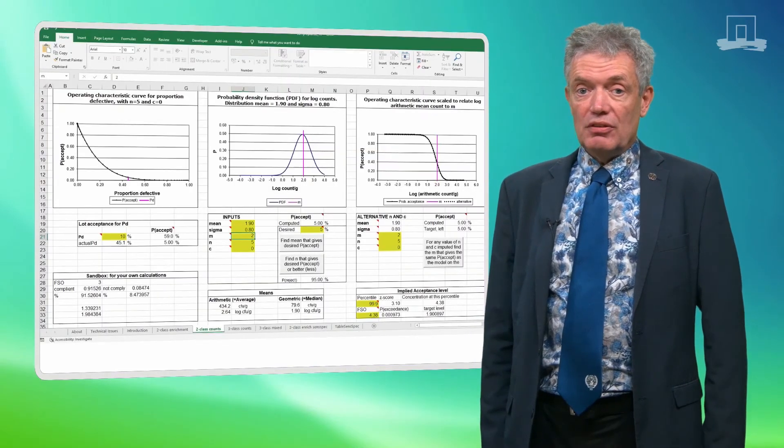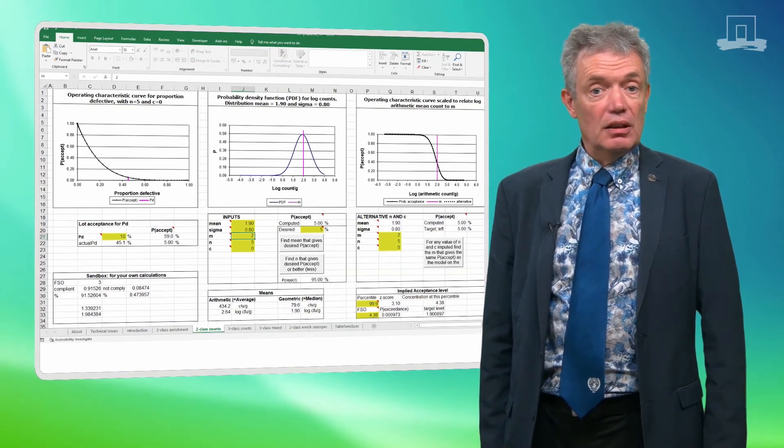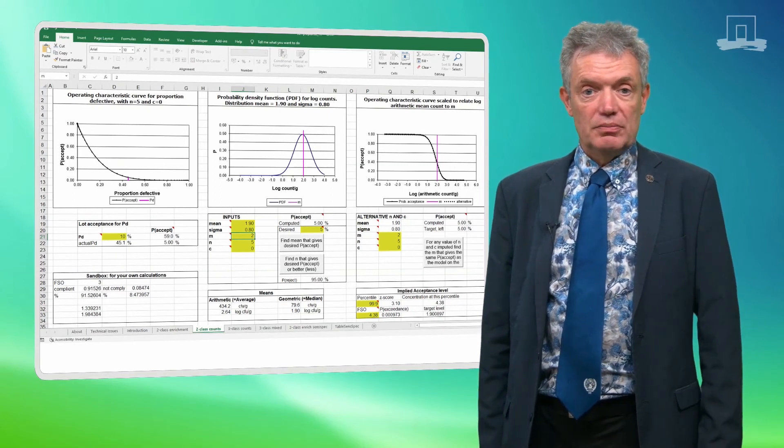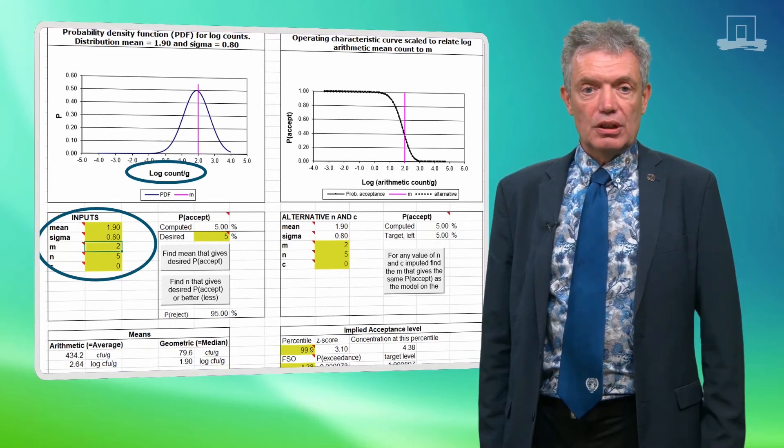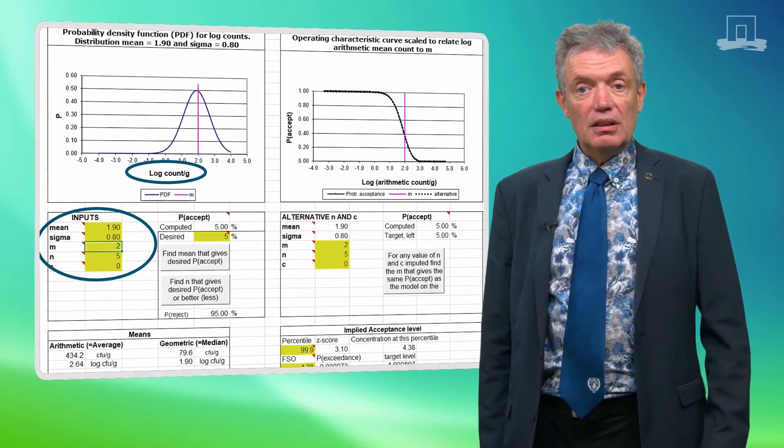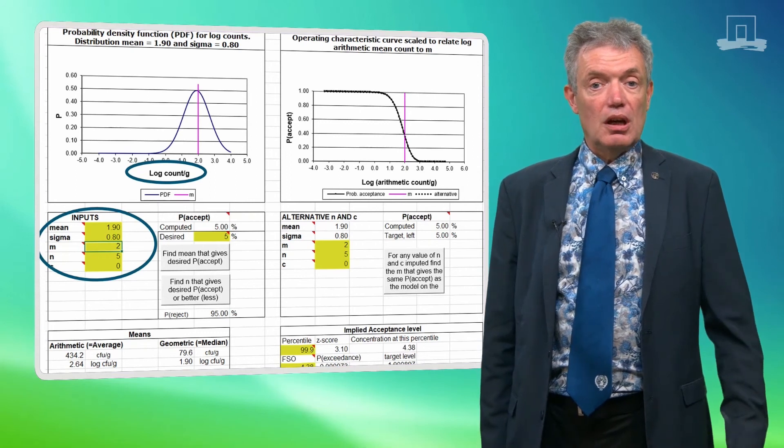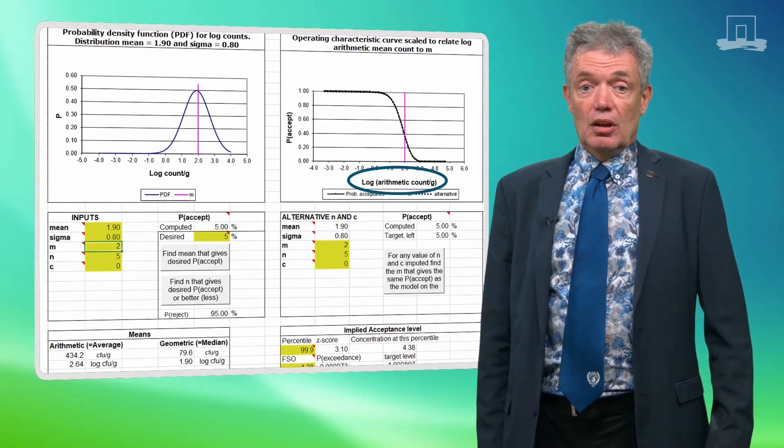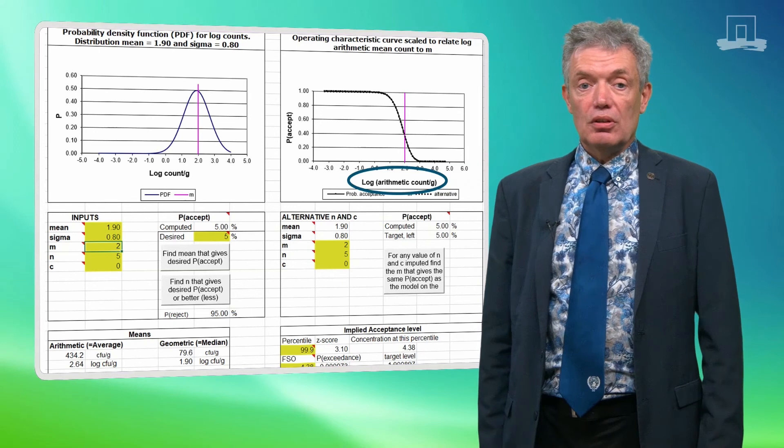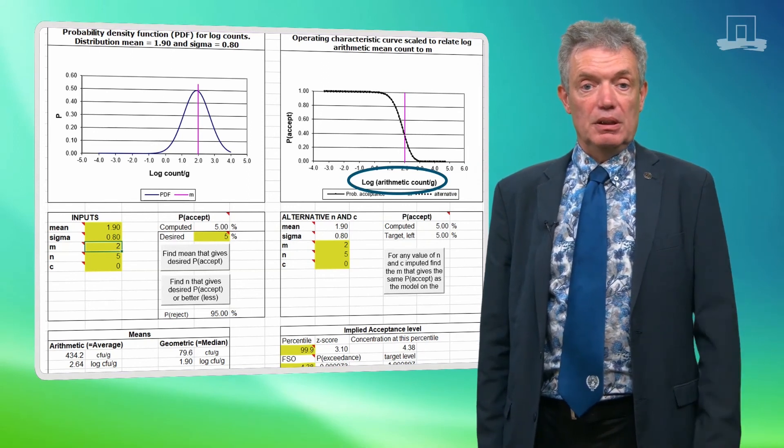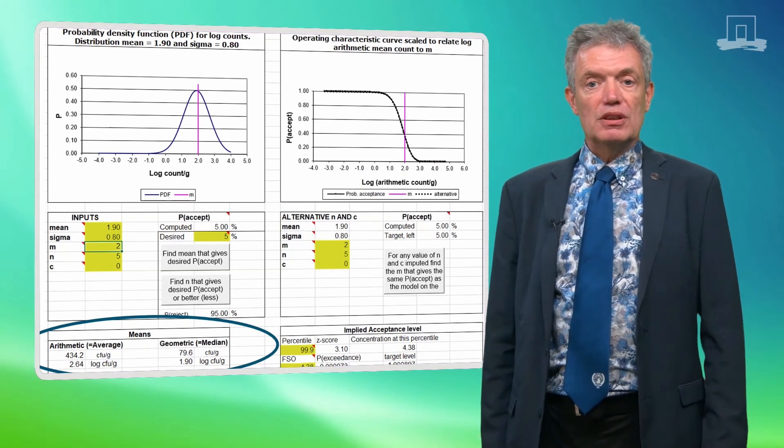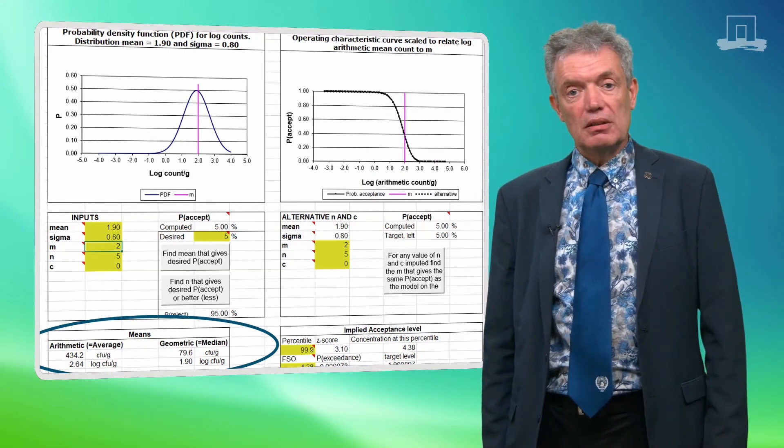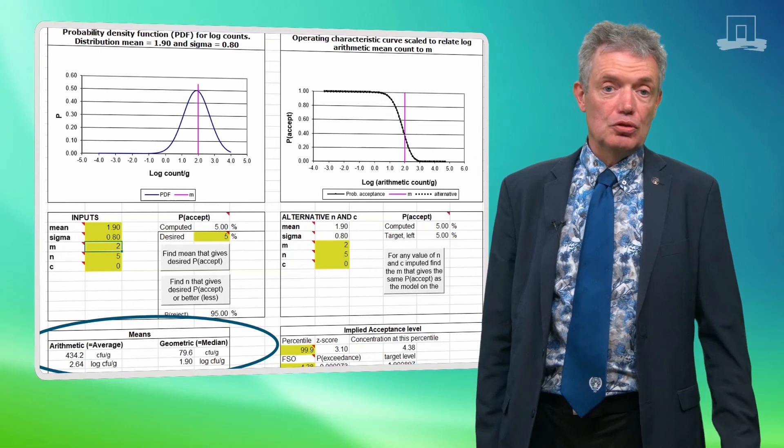Note that the ICMSF spreadsheet programmed in Excel includes support for these aspects. The concentration distribution is shown on log scale and the mean and the standard deviation of this log normal distribution are inputs. The operating characteristic curve on the other end is presented with the log arithmetic mean of the concentrations. And the performance of the sampling plan is described with both arithmetic and geometric values to support the user.